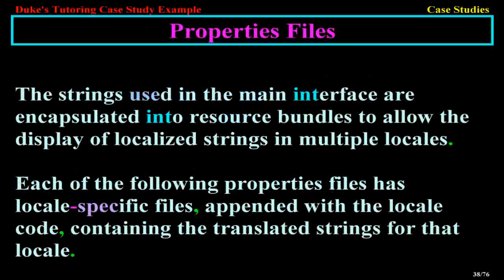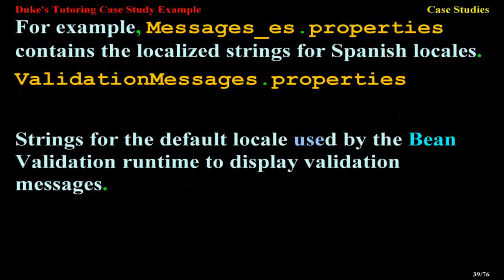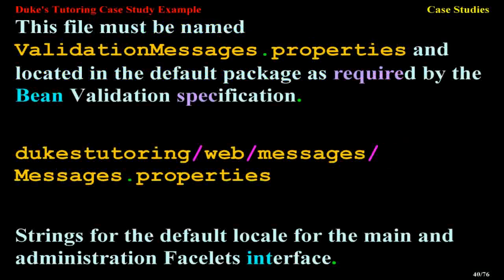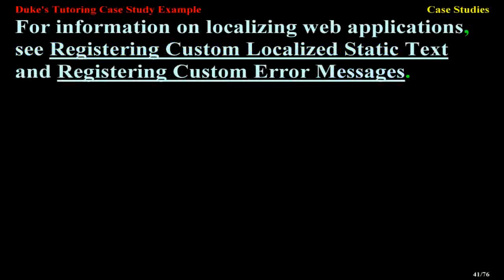The strings used in the main interface are encapsulated into resource bundles to allow the display of localized strings in multiple locales. Each of the following properties files has locale-specific files appended with the locale code containing translated strings for that locale — for example, messages_es.properties contains the localized strings for Spanish locales. ValidationMessages.properties contains strings for the default locale used by the Bean Validation runtime to display validation messages; this file must be named ValidationMessages.properties and located in the default package as required by the Bean Validation specification. Duke's Tutoring web messages/messages.properties contains strings for the default locale for the main and administration Facelets interface. For information on localizing web applications, see registering custom localized static text and registering custom error messages.